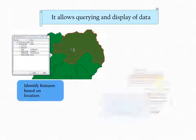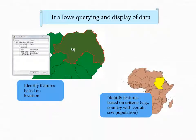QGIS allows querying and display of data, including feature identification based on location or other criteria.